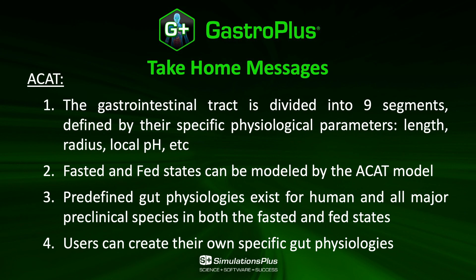The take-home message of this video is that the ACAT model represents the gastrointestinal tract and divides it into nine segments. Each segment is defined by physiological parameters such as the length, the radius, the pH, and so on. You can define the fasted and fed states and model them using the ACAT model. We have predefined gut physiologies for humans and all of the major preclinical species in both fasted and fed states. And of course, you can create your own gut physiology to represent a certain disease state or certain physiologies you would like to try in your simulation.